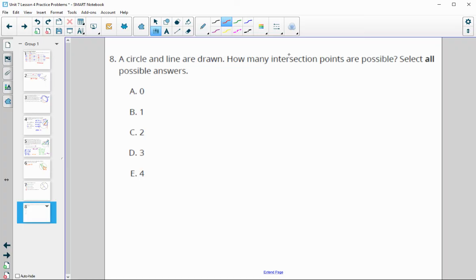And then number eight, a circle and a line are drawn. How many intersection points are possible? Circle all answers. So these two are crossing no times. So zero is an option. And we know that tangent means that it crosses at exactly one point. So that can happen. And then it can also cut through the circle and cross at two points. So that can certainly happen. But definitely can't hit at three points or four points. So zero, one, or two would be our options.